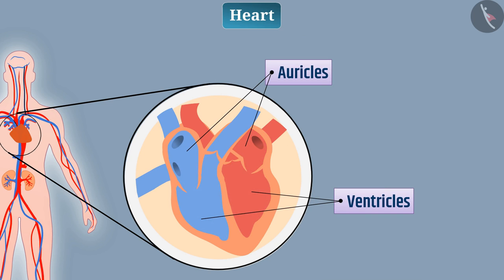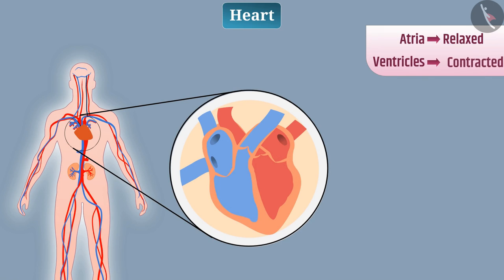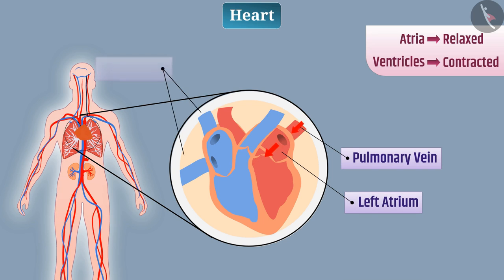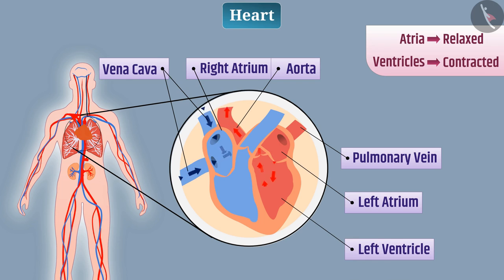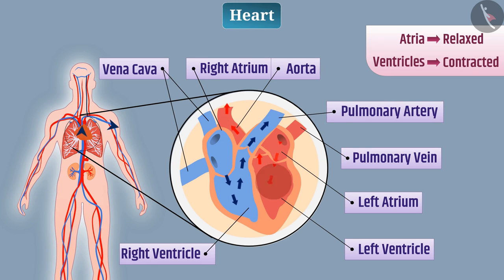When both atria are relaxed and both ventricles are contracted, the pulmonary vein brings oxygenated blood from the lungs into the left atrium. The aorta carries oxygenated blood from the left ventricle to various parts of the body. The deoxygenated blood in the right ventricle is carried by the pulmonary artery to the lungs for oxygenation. A valve between the atrium and ventricle prevents backflow of blood.